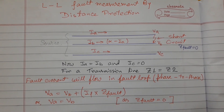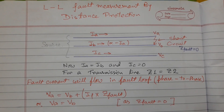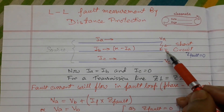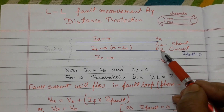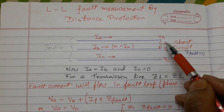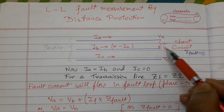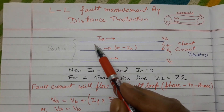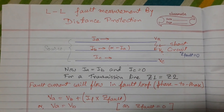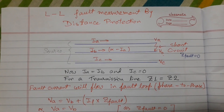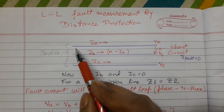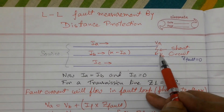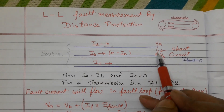In this video we will discuss line-to-line fault impedance measurement by a distance relay. This is a three-phase transmission line and suppose a line-to-line or double-L fault appears between phase A and phase B, with the impedance of fault equal to zero. This is the fault loop — the path in which the fault current traverses. Since the fault appears between these two phases, the fault current will follow this path.